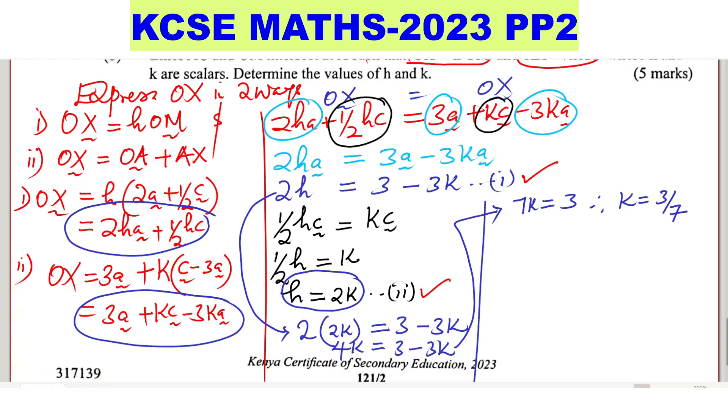Then remember what was h. H is equals to 2k. So h is equals to 2 times 3 over 7, which gives 6 over 7. So you have already found the values of h and k.